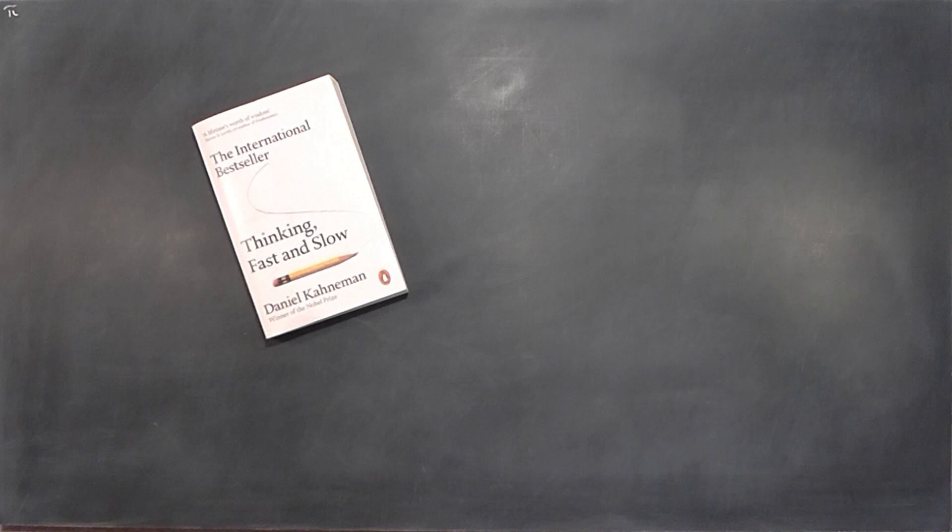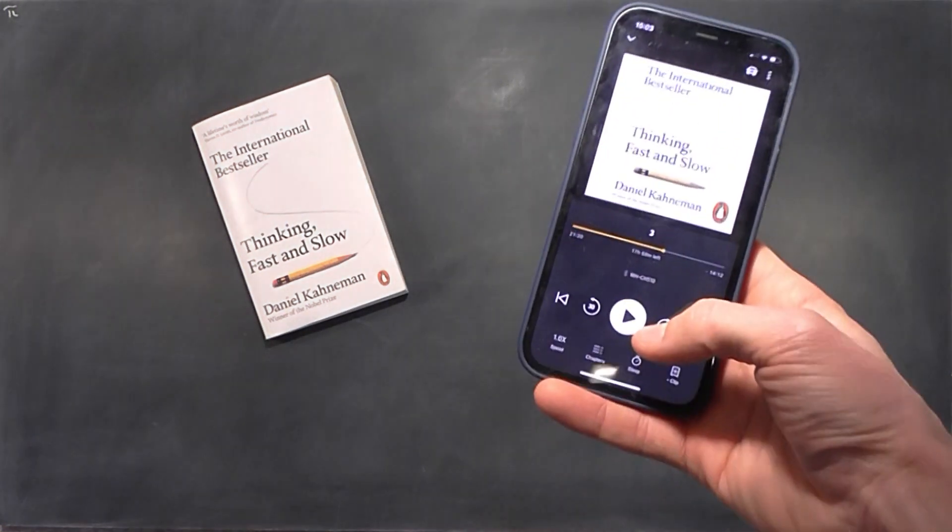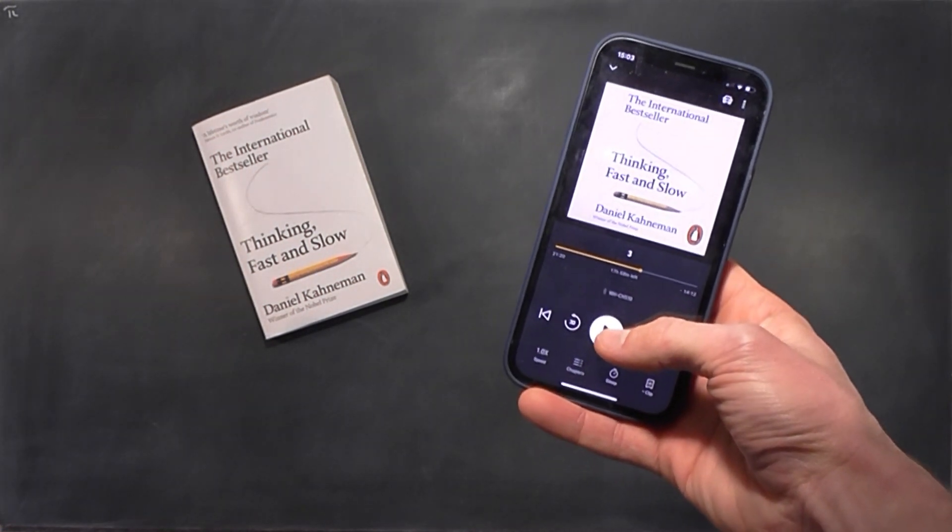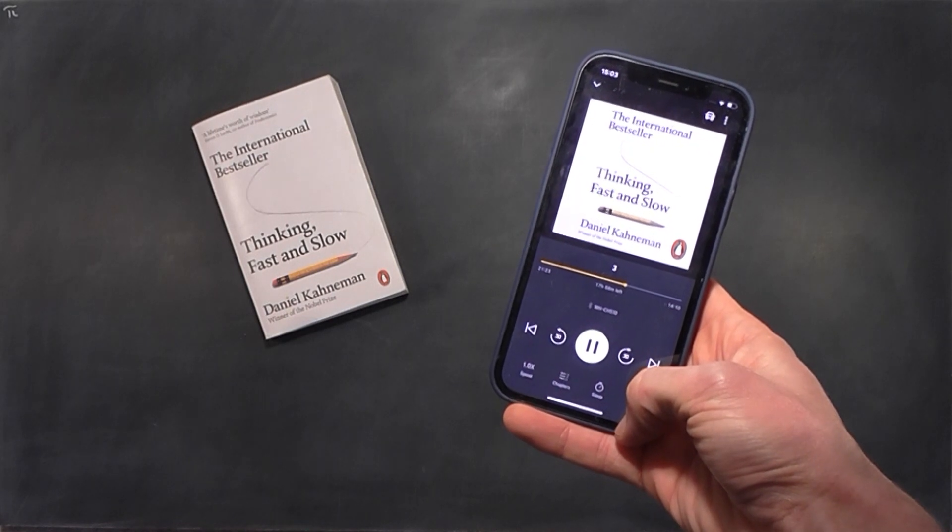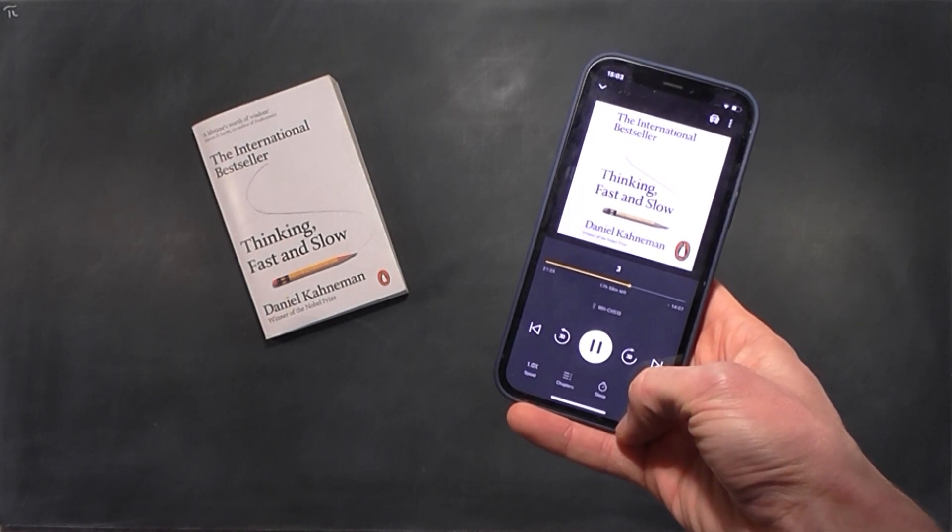Now time for a shameless personal plug which I promise I'll make quick. I would love to make more of these videos. So if you are going to purchase the book mentioned and you would like to support me to make more videos like this, please consider buying it through my Amazon affiliate link, which you can find in the description. Or if you'd like the audiobook version for free, all you need to do is make an Audible account using my affiliate link. Again, link in the description. Amazon will pay me a small fee for each sale at no extra cost to you.